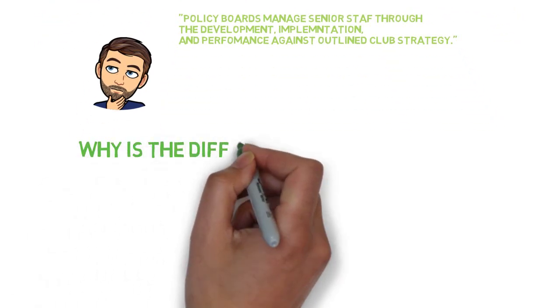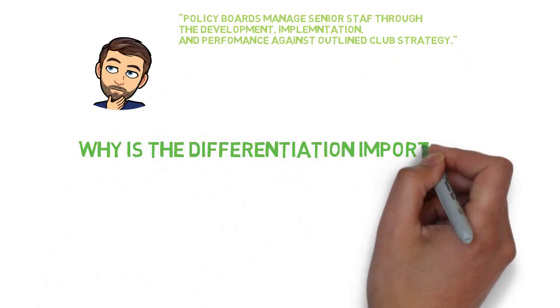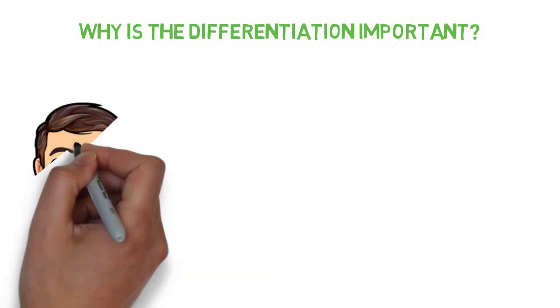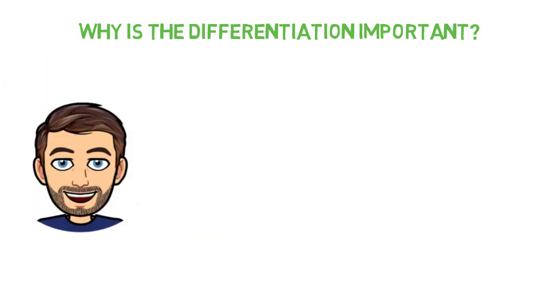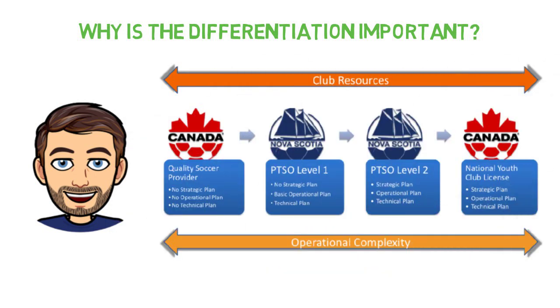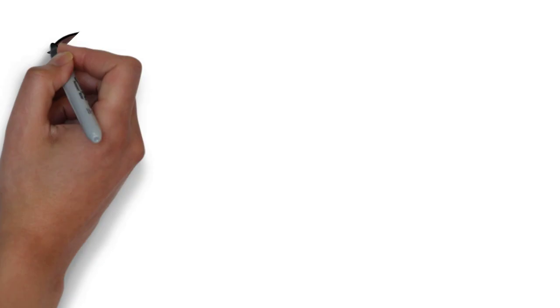The differentiation is important for clubs wishing to obtain the PTSL Level 2 and the National Youth Club License within the Canada Soccer Club License Program. Clubs that wish to achieve PTSL Level 2 and National Youth Club License will need to operate as policy boards due to the complexity of operations necessary to satisfy the criteria of these two licenses.